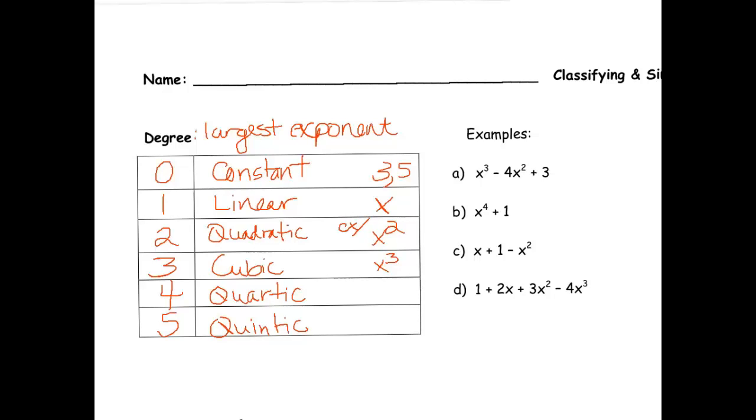So let's take a look at some examples and see if we can figure out what degree they are. So example a, x cubed minus 4x squared plus 3. The largest exponent would be 3, which makes this a cubic. How about example b. This has a largest exponent of 4. That makes this quartic. How about c. Notice that the exponent on x is really a 1. But we also have an exponent of 2. That's definitely the highest. So this is quadratic. And then our last example, our highest exponent is 3, which makes this one cubic.